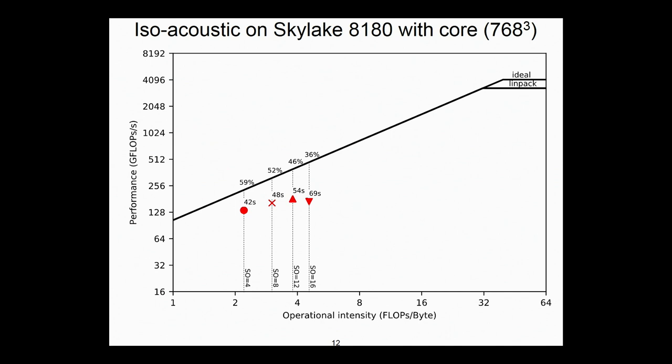You're going to have to take my word for it that this is important and good. It basically means that this is a hard limit on the possible performance that could be achieved given that bit of hardware. So you're achieving in this case 36% out of the box.